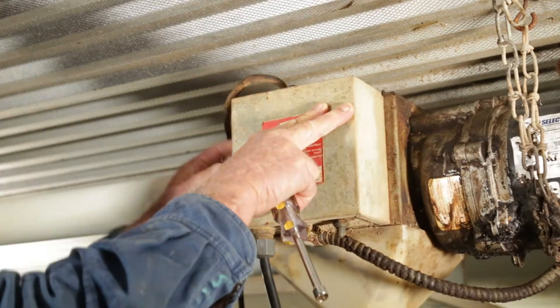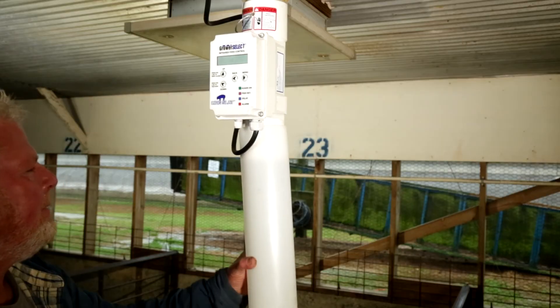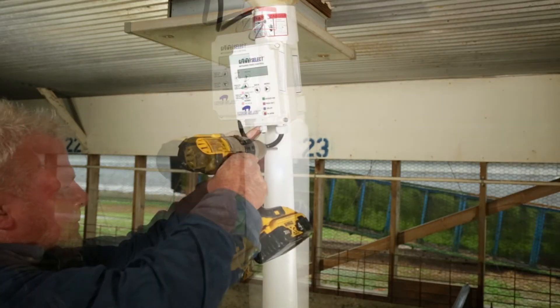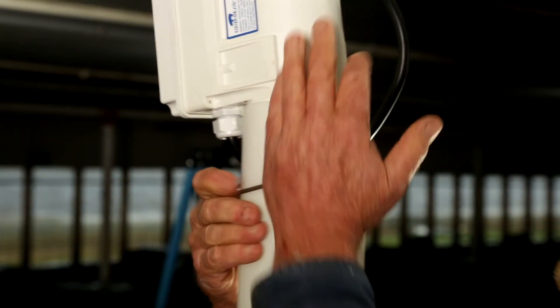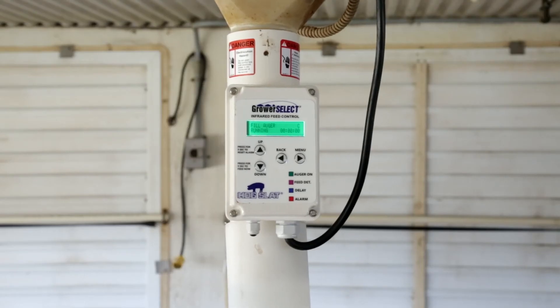With the wiring complete, go ahead and reattach the control box cover. Install the drop tube to the lower pipe of the HS820 by drilling holes into both sides then securing it with a wire pin. The installation of your infrared control is now complete.